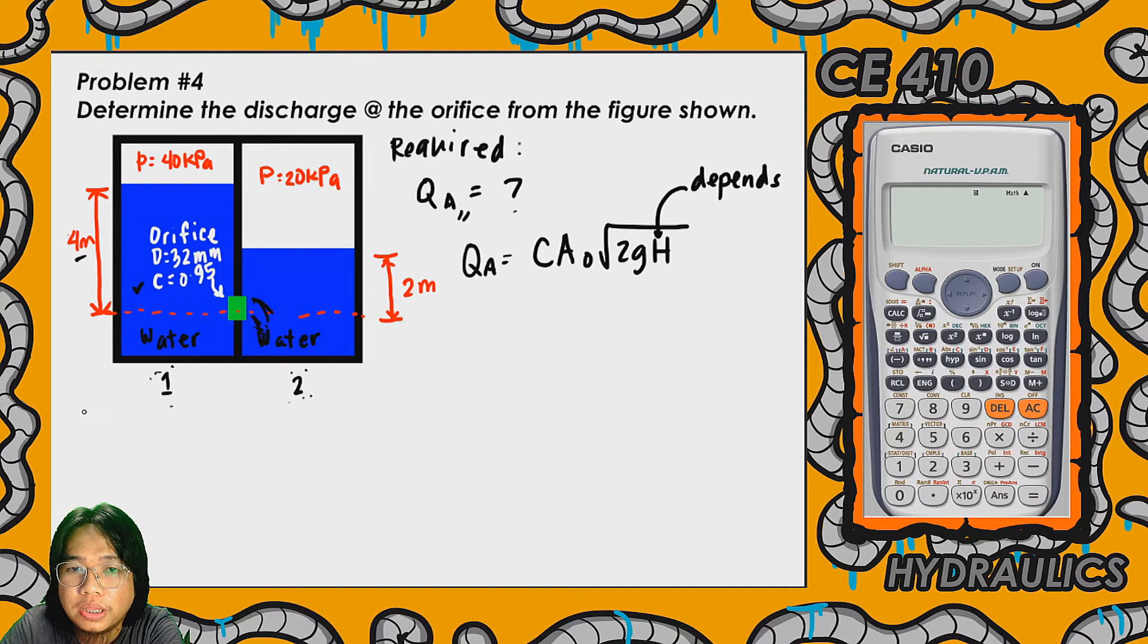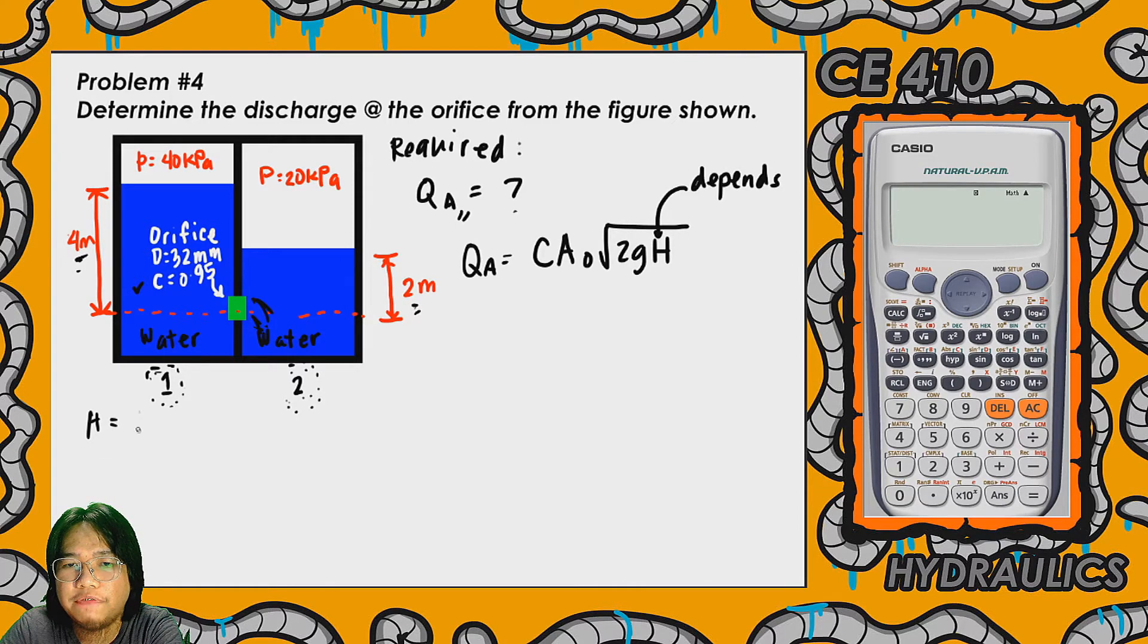As I always say, uppercase H always depends on the existing energy that triggers discharge at the orifice. Since we have 2 compartments here, chamber 1 and chamber 2, there are also 2 energy heads involved. Chamber number 1 has the higher head than chamber number 2. In this case, we need to determine the difference between the total energy head of the upstream reservoir minus the total energy head of the downstream reservoir.